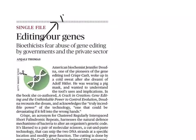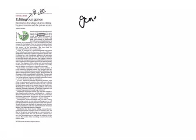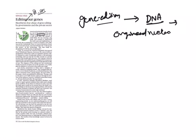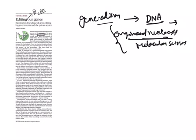Our next article is 'Editing Our Genes,' which comes under GS Paper 3 under Science and Technology. Gene editing or genome editing means making specific changes to the DNA sequence of a cell or organism. An enzyme is used to cut the DNA at a specific sequence, which is then repaired or edited. These enzymes are called engineered nucleases, also known as molecular scissors, used to cut DNA at a specific location.